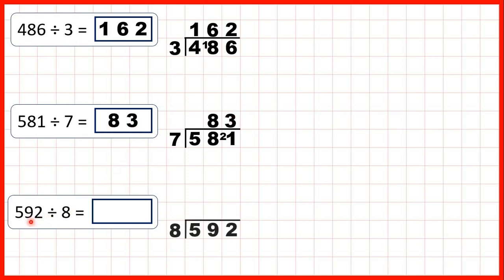Now let's try 592 divided by 8. Again the first digit is smaller than the divisor, so we can take the first two digits together and divide 59 by 8.